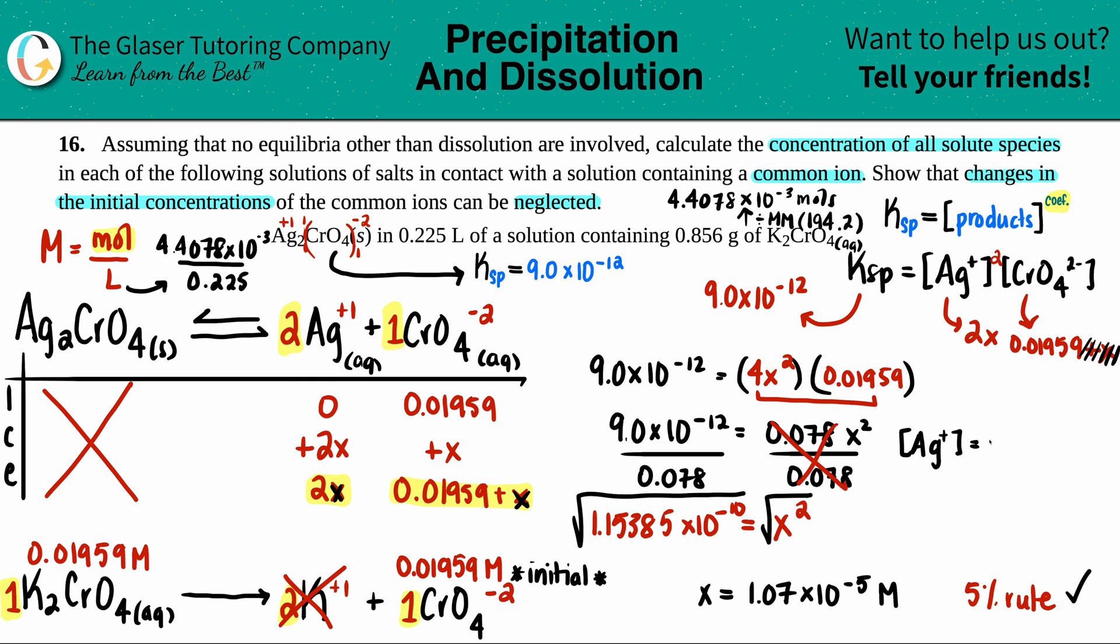For the chromate, CrO4, it's 0.01959 plus the x value. 0.01959 plus 1.07 times 10 to the negative 5th equals 0.0196 molarity. Does it even move? It moves a little bit.